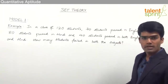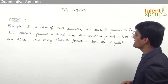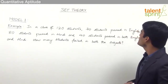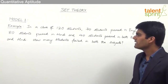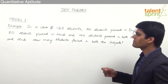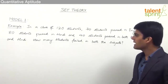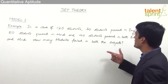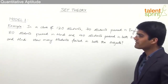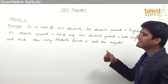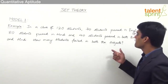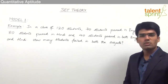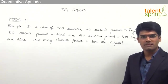In a class of 120 students, 70 students passed in English, 80 students passed in Hindi, and 40 students passed in both English and Hindi. How many students failed in both the subjects?